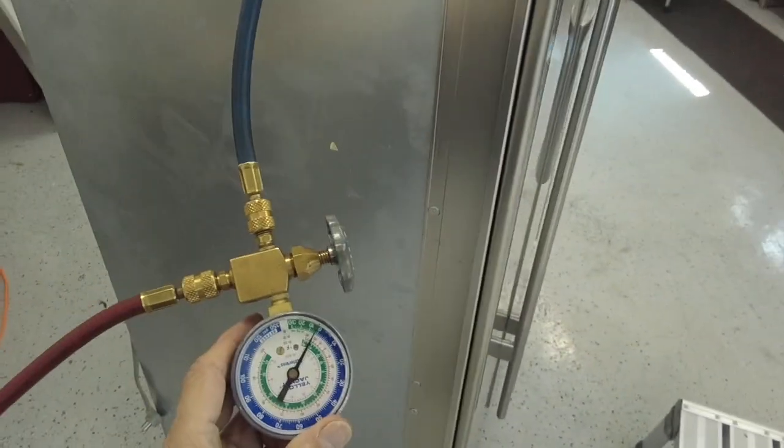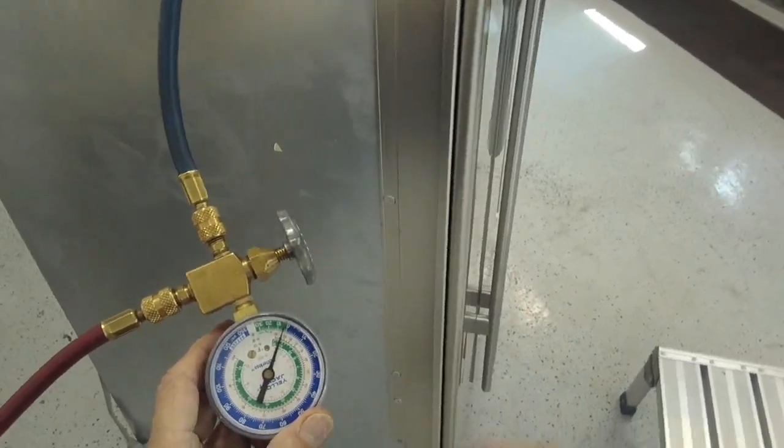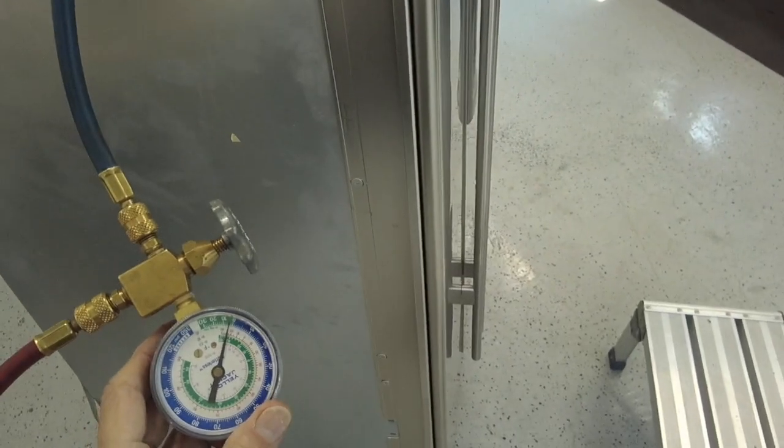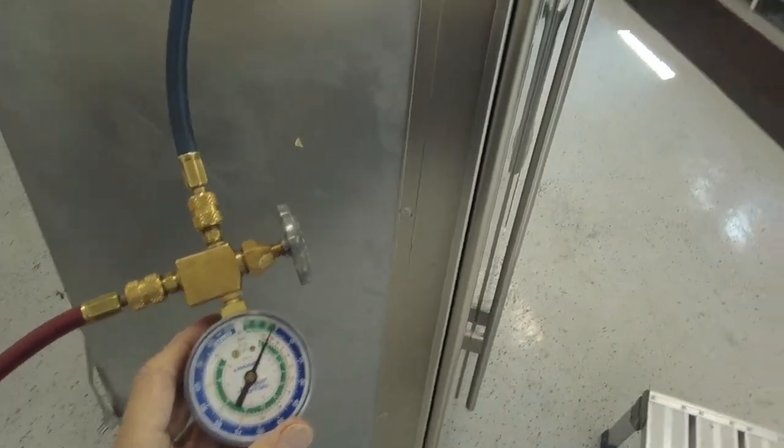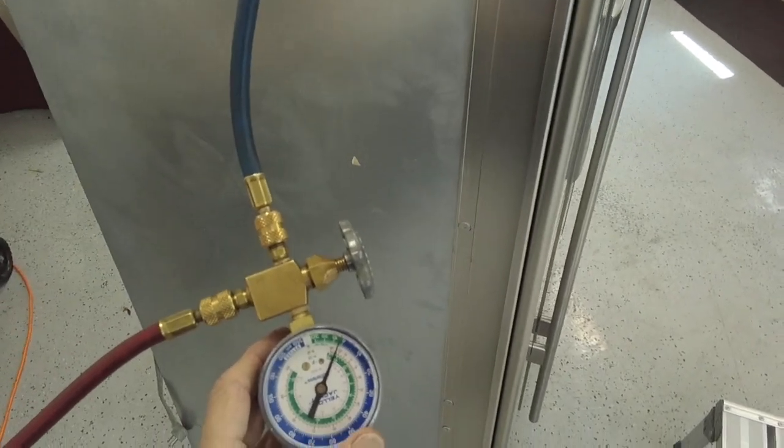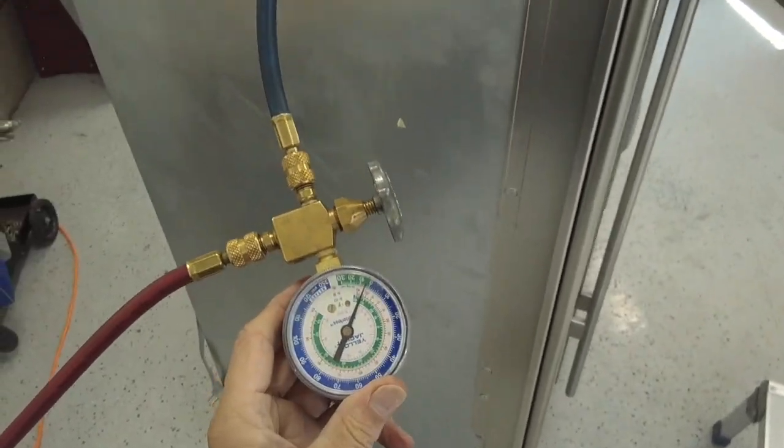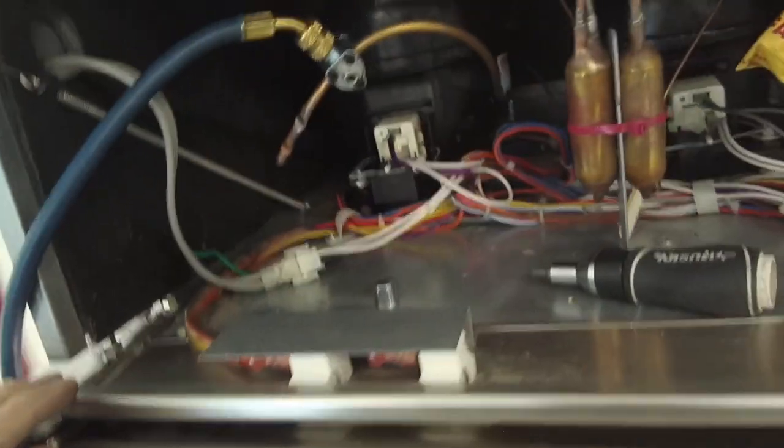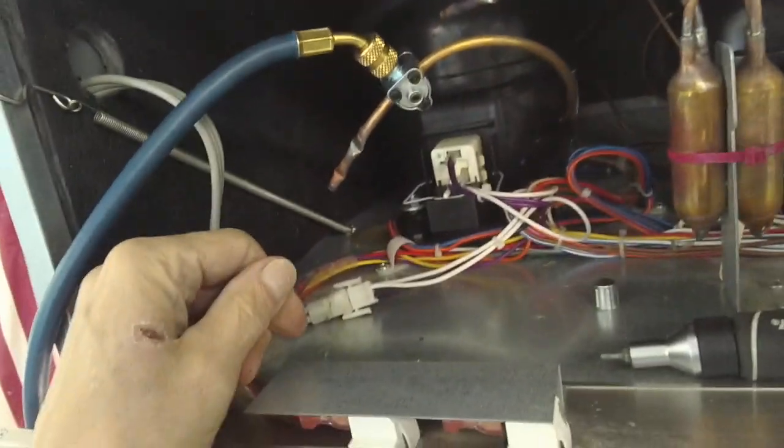It's recommended at least 10 inches in a vacuum. 10 inches of mercury is the proper terminology. You want to make sure you're in a vacuum before you open up the system so as not to ventilate any refrigerant into the air. It's illegal. It's not right.